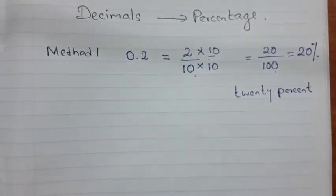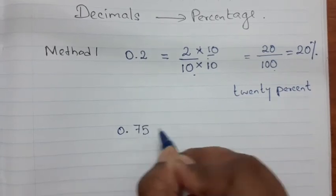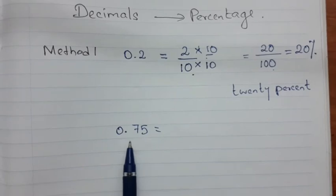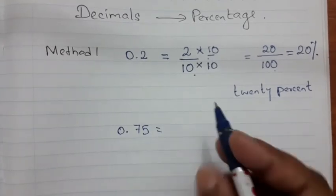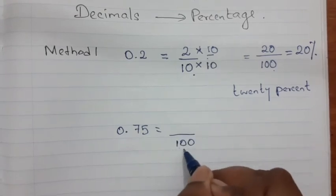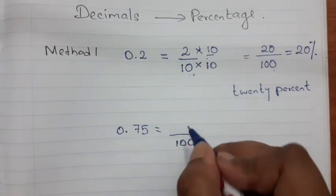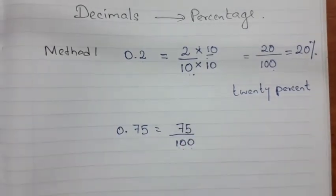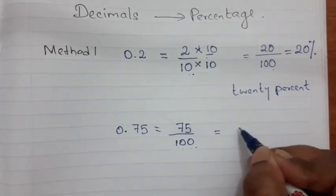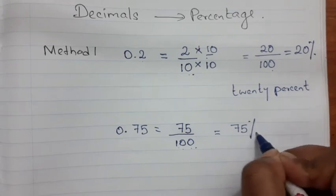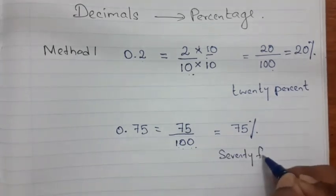Let's try another example: 0.75. Convert it to a fraction first. Since there are 2 digits after the decimal point, the denominator will be 100, because 100 has 2 zeros. So the numerator is 75, giving us 75/100. Since the denominator is already 100, you don't need to multiply further — you can directly write it as 75%.